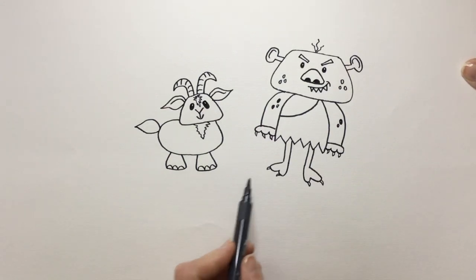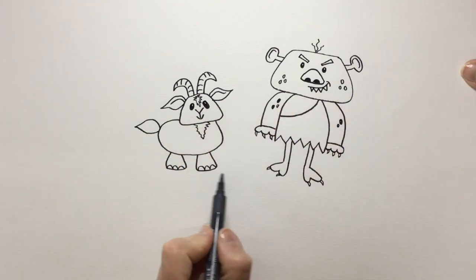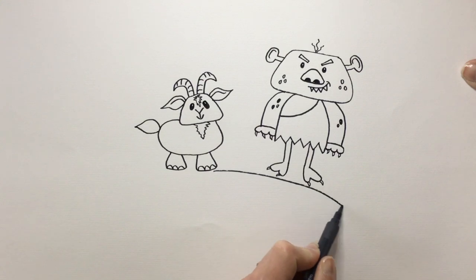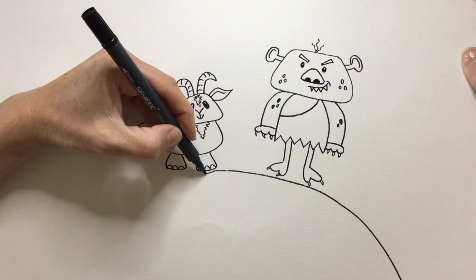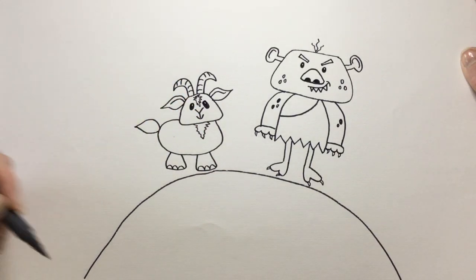Now we need to get the bridge in. Now you can see that the troll is on this side and the goat's on this side. So we're going to try and draw a rainbow shape underneath them. Let's see if I can draw the other half of this rainbow shape.